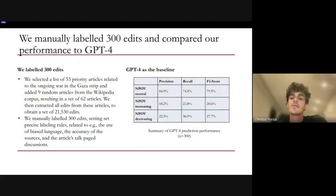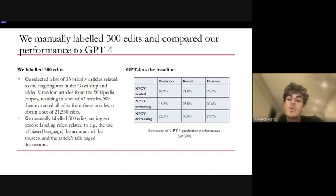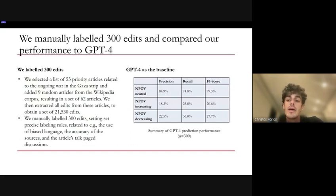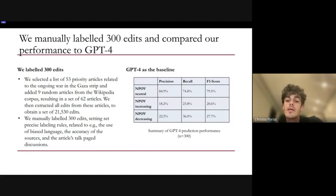To address that gap, we developed a custom machine learning classifier that looks at individual edits of Wikipedia articles. We began by selecting 62 Wikipedia articles related to the Gaza Strip conflict and extracted just over 20,000 edits from these articles. We manually labeled 300 random edits to create our initial training set, which we use as a gold standard, and our baseline comparison is GPT-4, which classified edits with an accuracy of 64.5%.